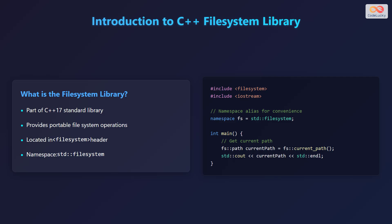Here's an example code snippet. First, include the filesystem header and the iostream header. Create a namespace alias fs for convenience, pointing to the std::filesystem namespace. Inside the main function, get the current path using fs::path and store it in current_path. Then print the current path to the console using std::cout.